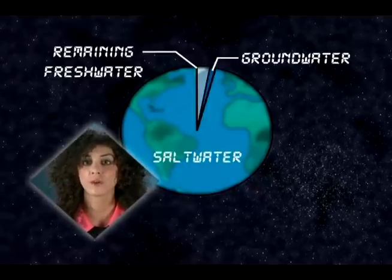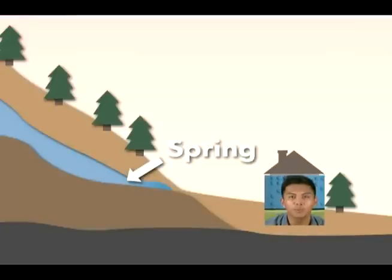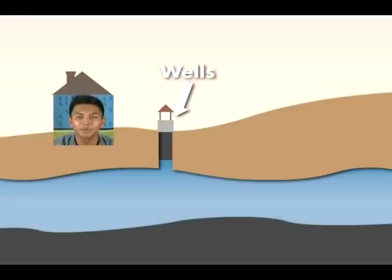Groundwater makes up about 30% of Earth's fresh water and can be an important source of water for humans. Sometimes groundwater can be accessed through a spring, which is an area where the water breaks through the surface of the ground. People also dig wells to access groundwater. Both springs and wells can be important sources of drinking water. When humans use groundwater as a resource, it is constantly being replenished by rain and nearby water sources. However, it is important not to use groundwater supplies at a faster rate than they are naturally replenished, or the water table can drop and wells can run dry. Groundwater is a resource that must be conserved.